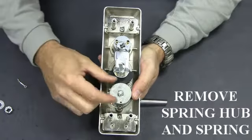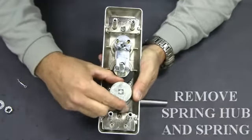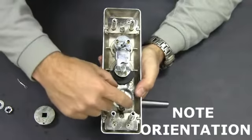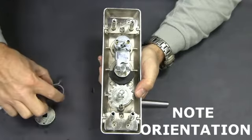Next, remove the spring hub and spring. Note the orientation of the spring hub. A stamped 6 will be on the bottom of this hub at the 6 o'clock position.